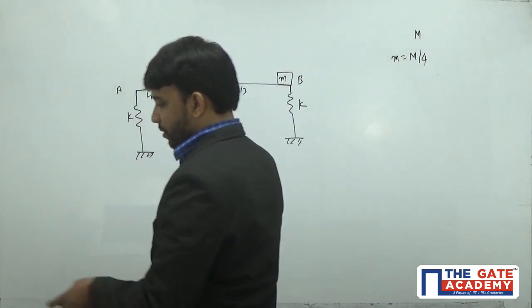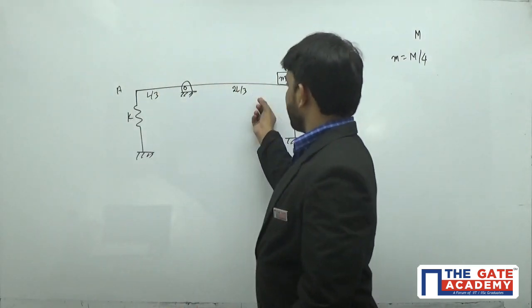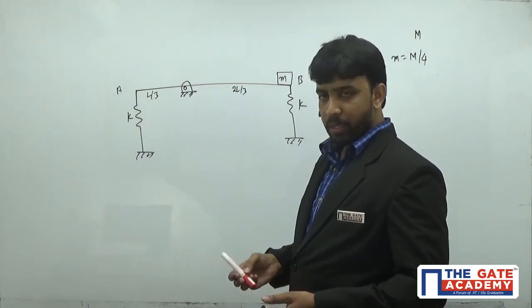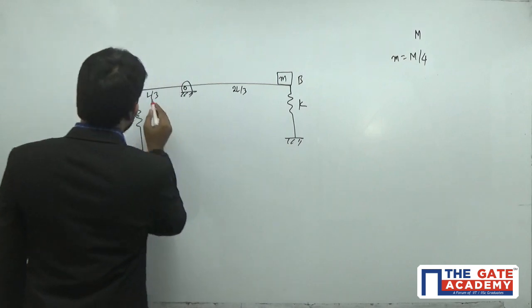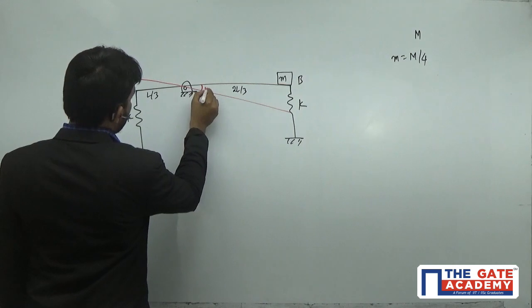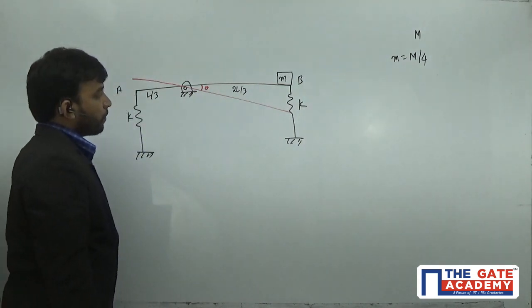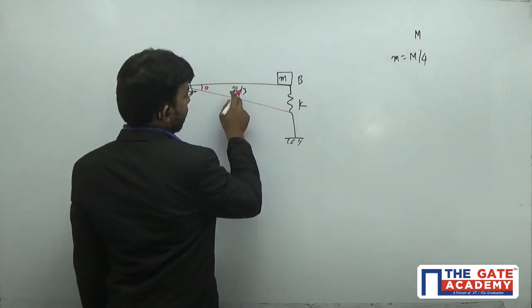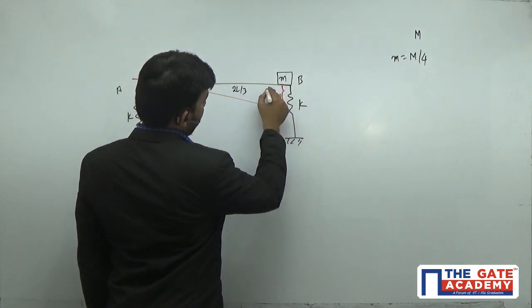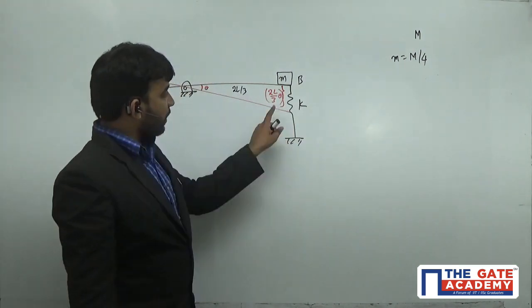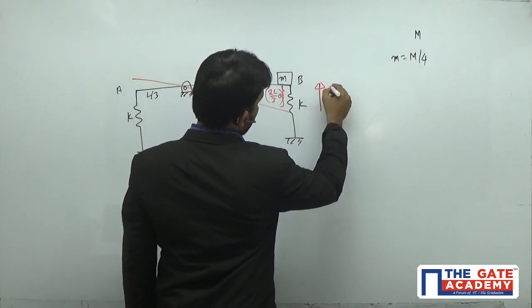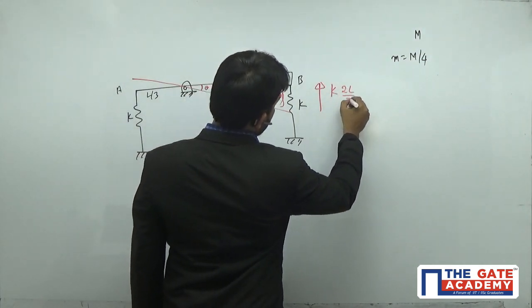I disturbed the system — I pulled it down and released it, so now the rod is oscillating about the hinge. At any instant, the rod makes a small angle θ with respect to its mean position. The displacement at the 2L/3 side is 2L/3 times θ, and the spring on that side is compressed by that amount, producing a spring force K·(2L/3)·θ.